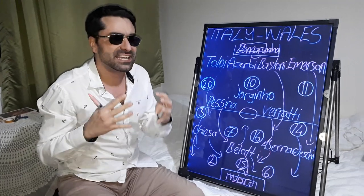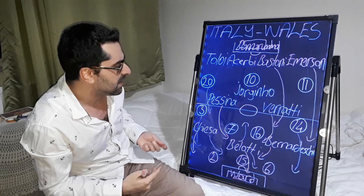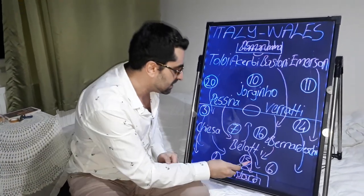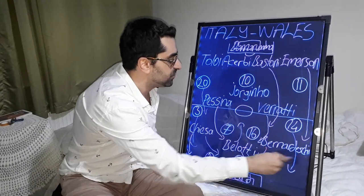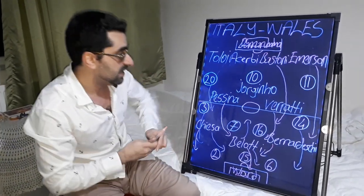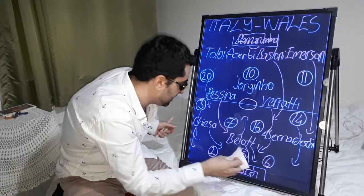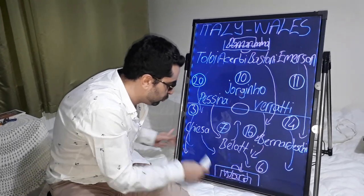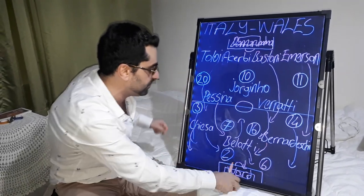Italy had already guaranteed their place in the last 16 of Euro 2020. Around the 55th minute, Ampadu came back to midfield and made a hard foul on Bernardeschi, receiving a red card. After his sending off, Wales' formation changed — Ampadu left the pitch, and the centre-backs Ginter and Rodon played in the centre of defence.